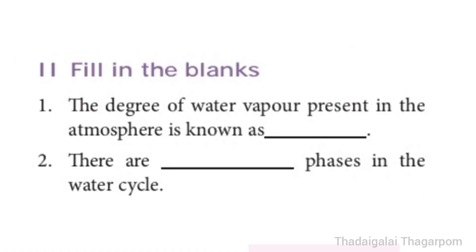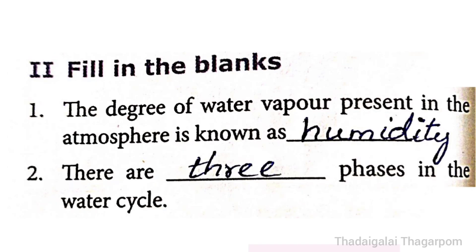Roman Number 5: Fill in the Blanks. 1st one: The degree of water vapour present in the atmosphere is known as — The answer is Humidity. The degree of water vapour present in the atmosphere is known as Humidity. 2nd one: There are — phases in the water cycle. The answer is 3. There are 3 phases in the water cycle.